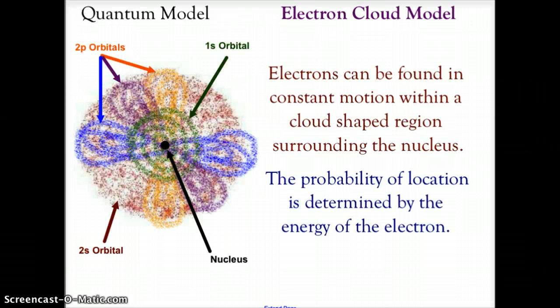The quantum model says the nucleus is a highly dense, concentrated, centralized area of the atom but that the majority of the atom is actually empty space made up of these clouds. It is called the electron cloud model because electrons can be found in constant states of motion in a cloud-shaped region surrounding the nucleus. That cloud-shaped region is dependent upon whether we're in an s orbital or a p orbital or d orbital and their location is entirely based on the amount of energy the electron has in that orbit.